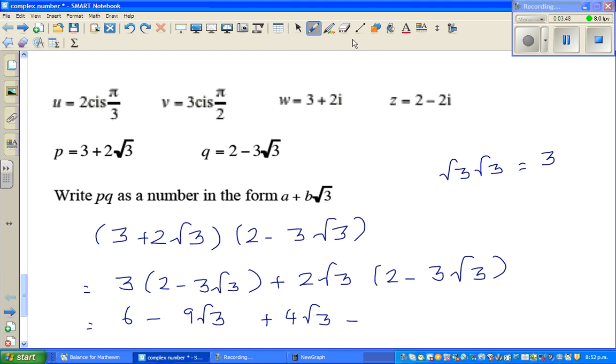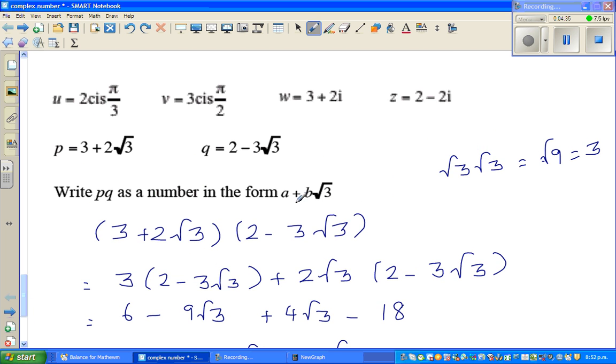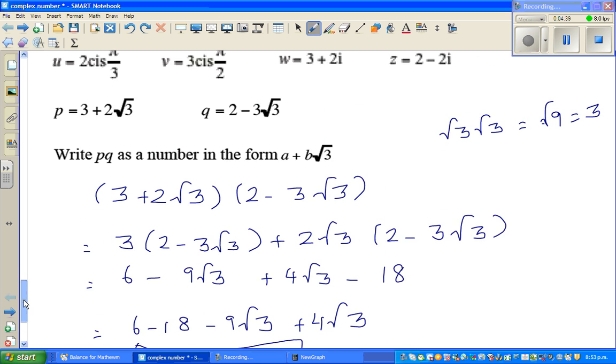Root 3 times root 3 is root 9, and root 9 is 3. So you're multiplying 2 times 3 is 6, and then root 3 times root 3 is 3, so 6 times 3 is 18. So this is nothing but, so 6 minus 18, minus 9 root 3, plus 4 root 3, so this is nothing but minus 12, minus 5 root 3. So this is your final answer. This is called a third form, and your A is minus 12, and B is minus 5.